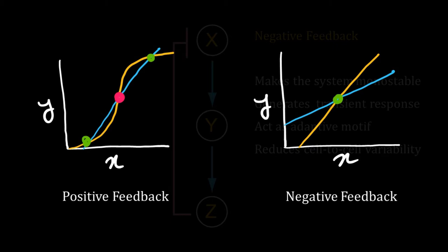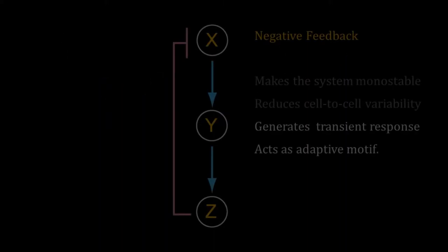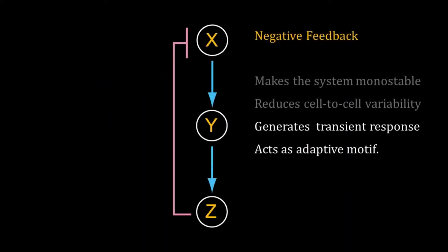Those were positive feedback motifs. Bistability in gene regulation amplifies the stochastic variation in gene expression and creates bimodal populations. But negative feedback reduces cell-to-cell variation and generates a unimodal population around the stable steady state. Like an incoherent feedforward, negative feedback also generates transient response for a sustained input and acts as an adaptive motif.